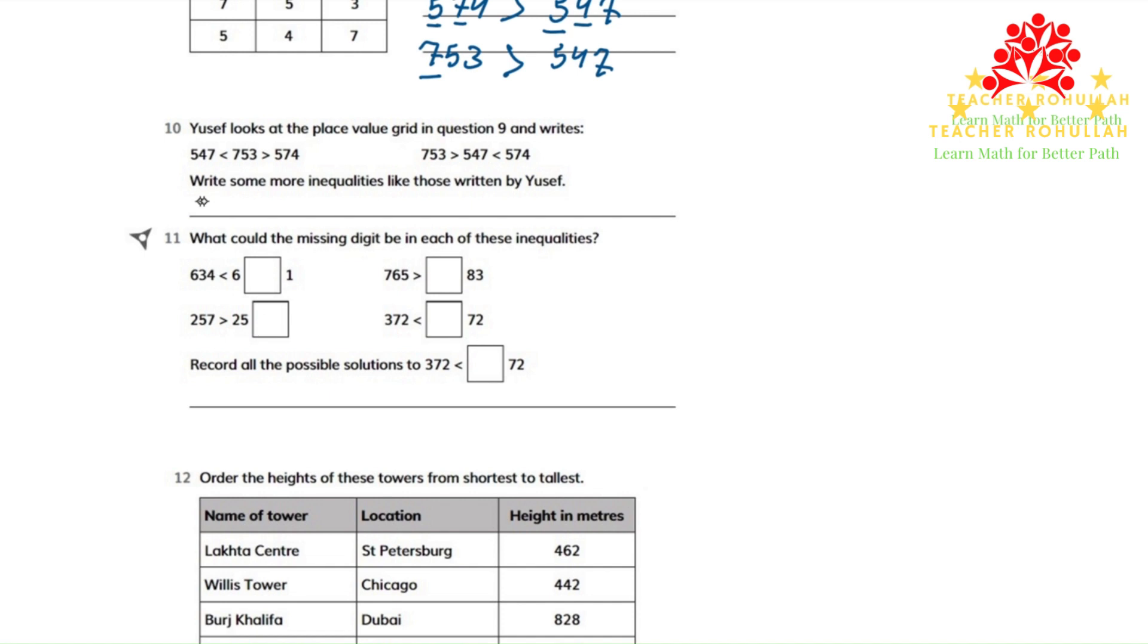So I can write 547 is less than 574, and 574 is less than 753.